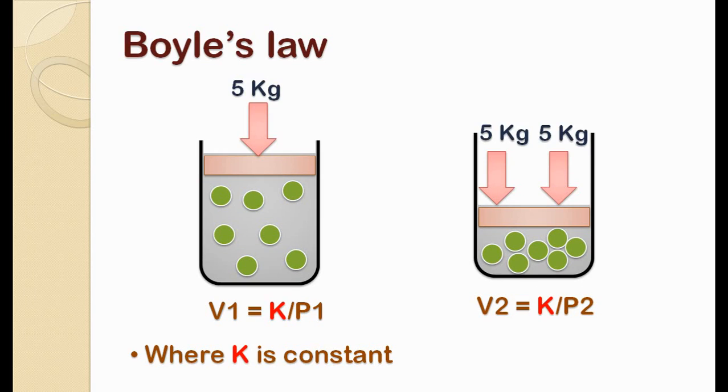To simplify this again, we will introduce one constant which is k. So P1 is equal to k divided by V1, and the second equation becomes P2 is equal to k divided by V2.